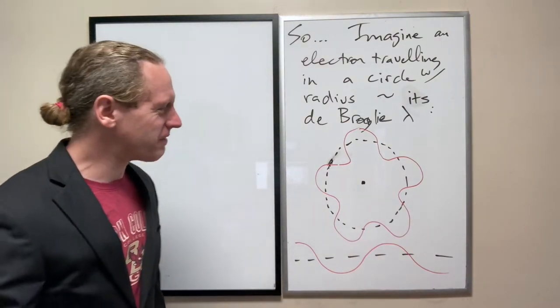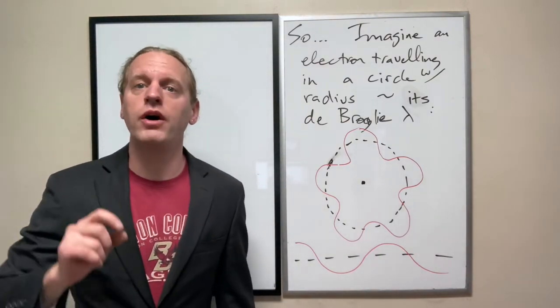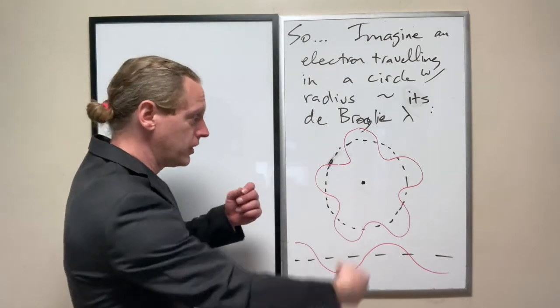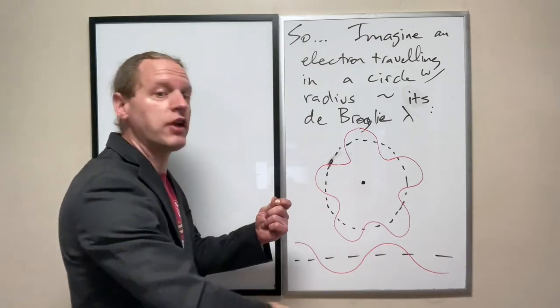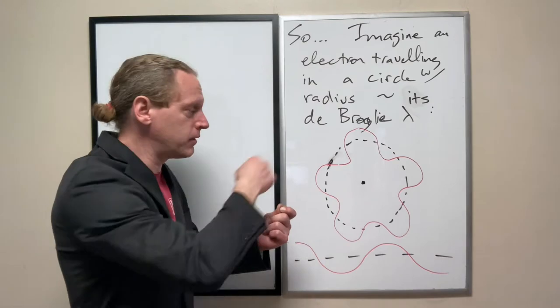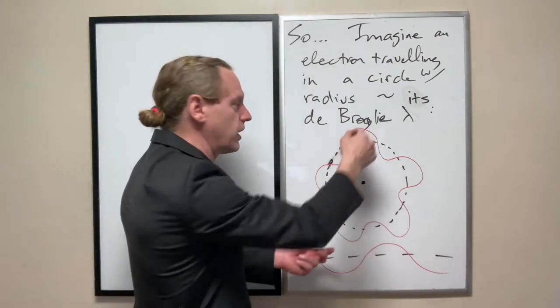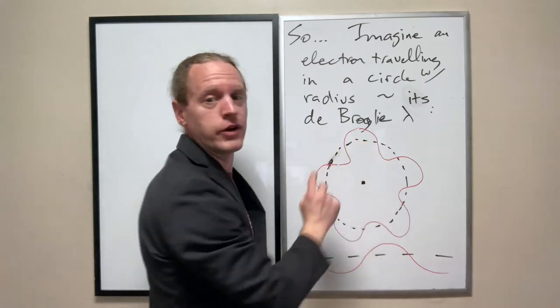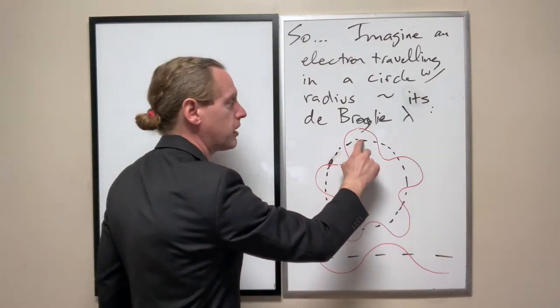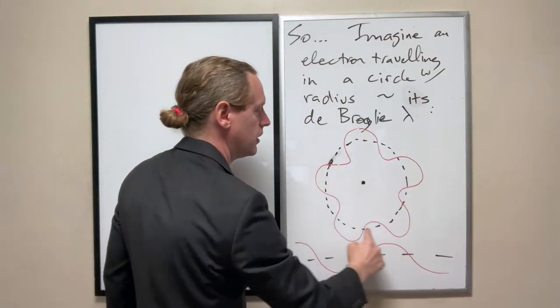And here's the cool thing: the allowed orbitals, or the allowed radii at which the hydrogen electron can orbit, are precisely those radii where you can fit a perfectly whole number of wavelengths into one trip around.